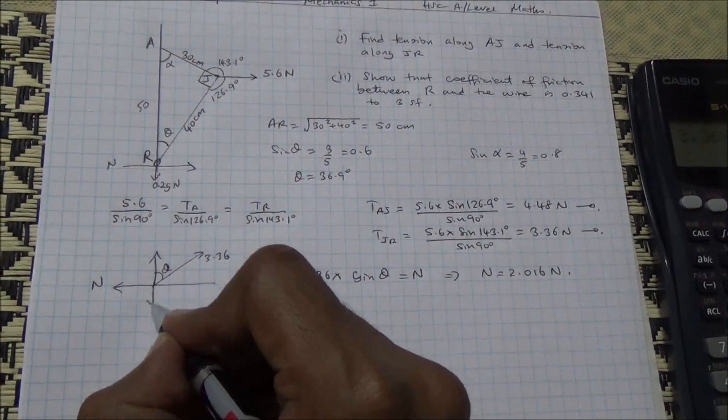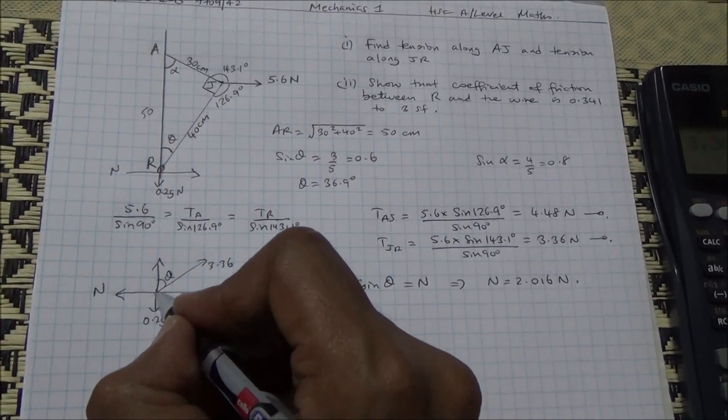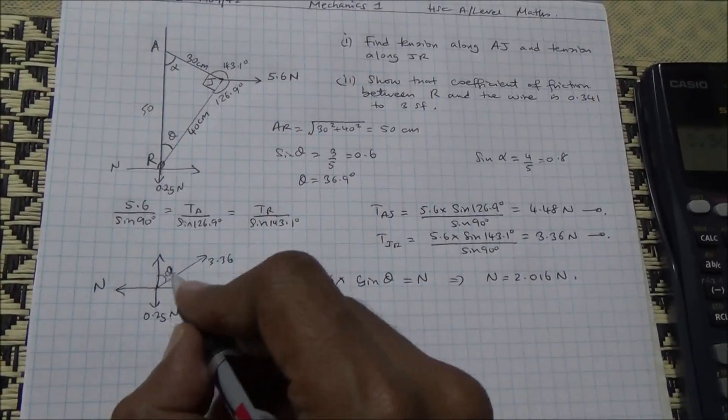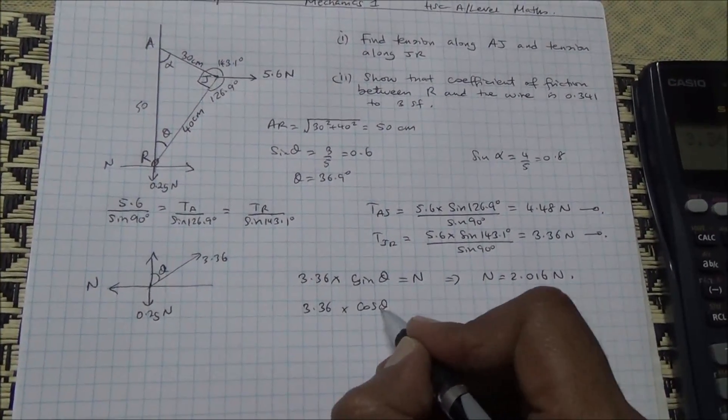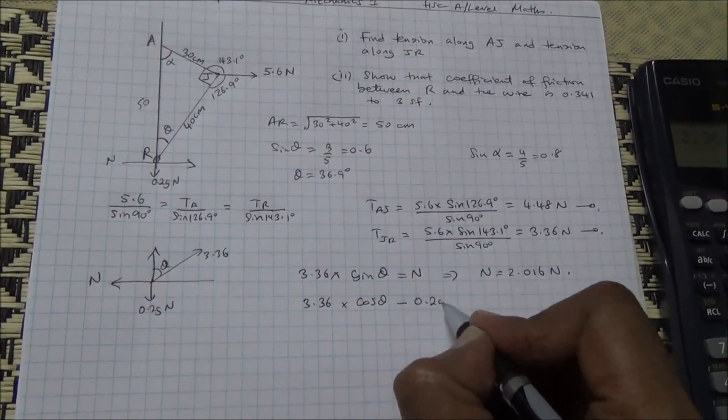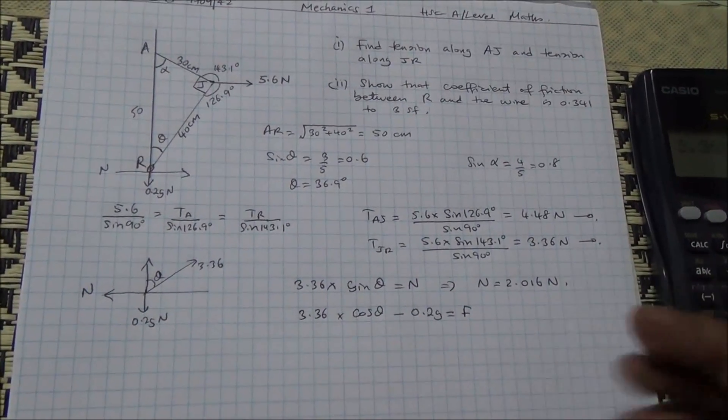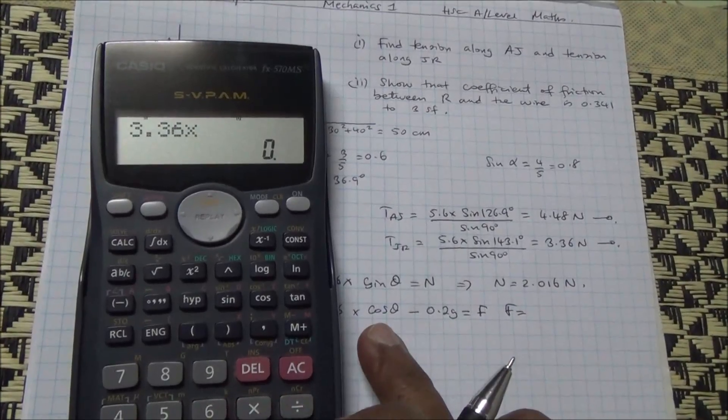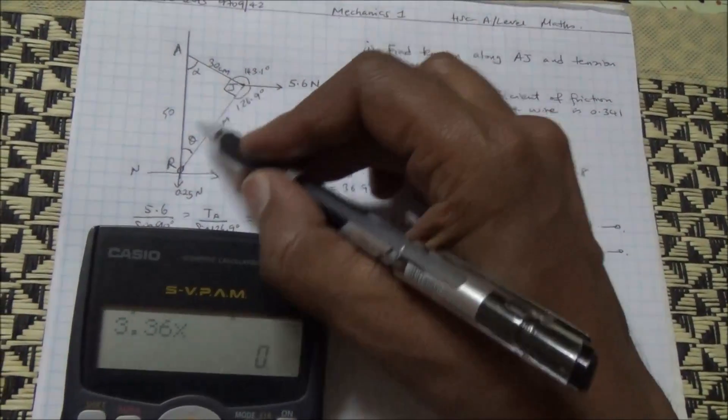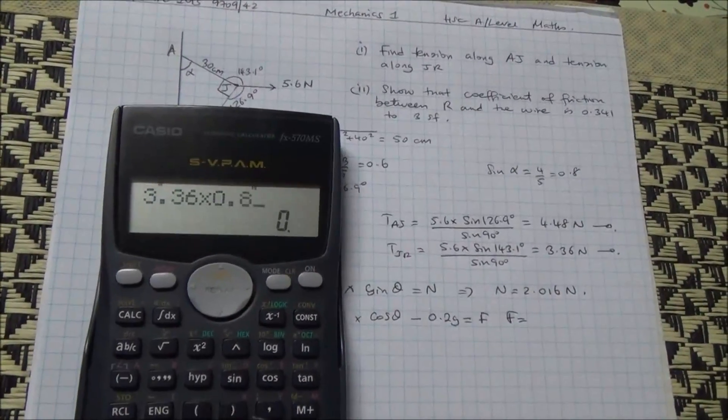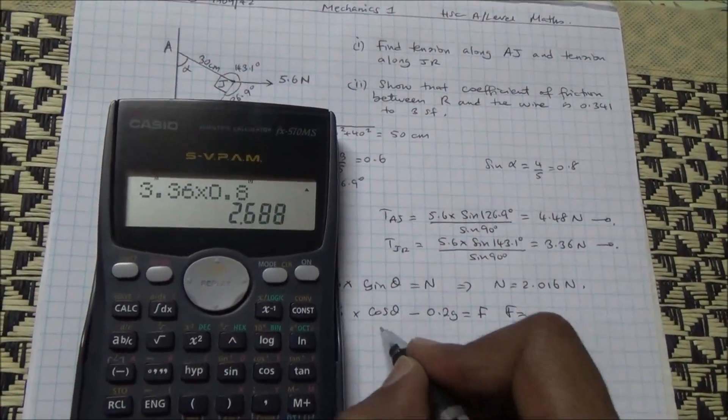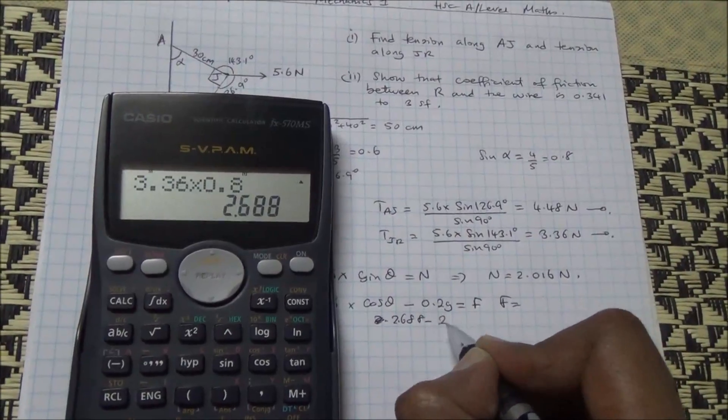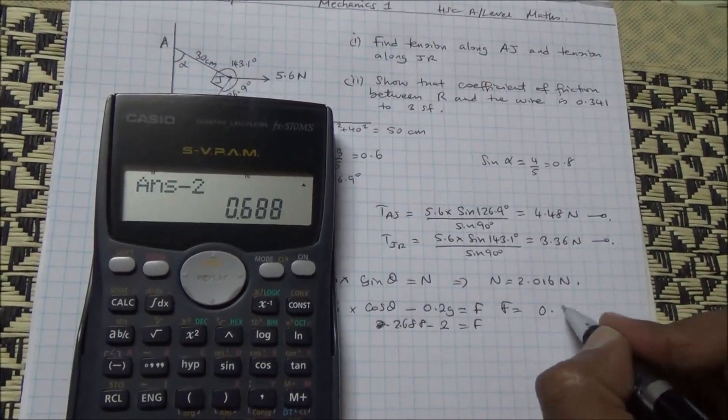Resolving vertically, remember this is 0.2g Newtons. So vertically, I can say the force acting upward, which is 3.36 times the cos of theta, because it contains the angle, minus 0.2g Newtons is equal to the friction force. So what do we have? The force is 3.36 times cos of theta. What is cos? Cos is adjacent over hypotenuse, 4 over 5, which is 0.8. So that's going to give us 2.688 minus 2 is equal to the force. So minus 2, it's going to give us 0.688.